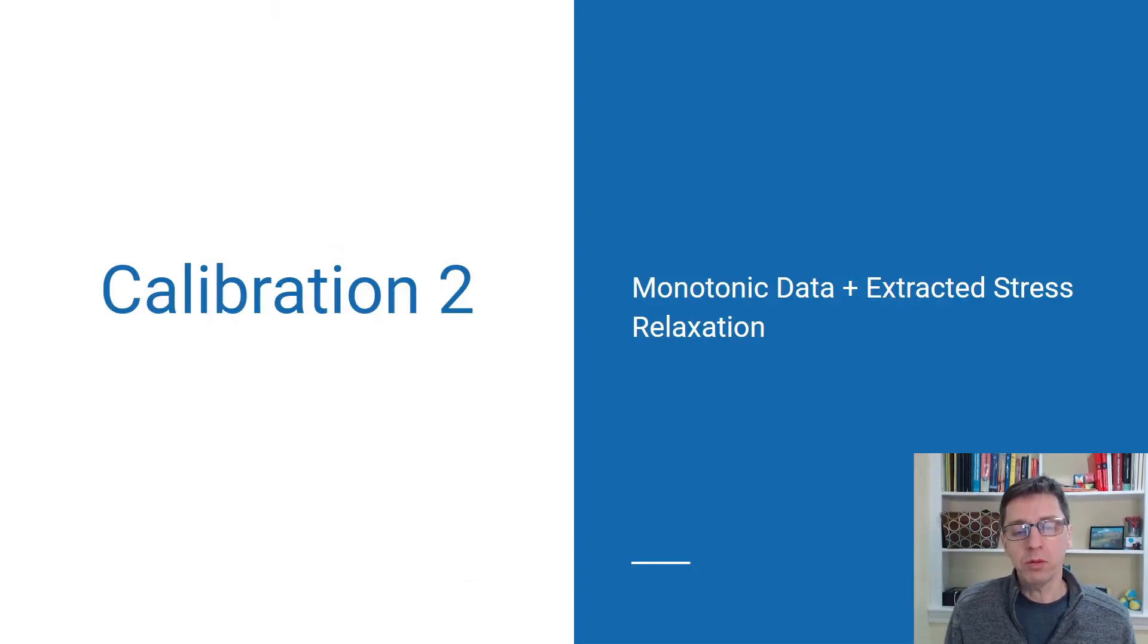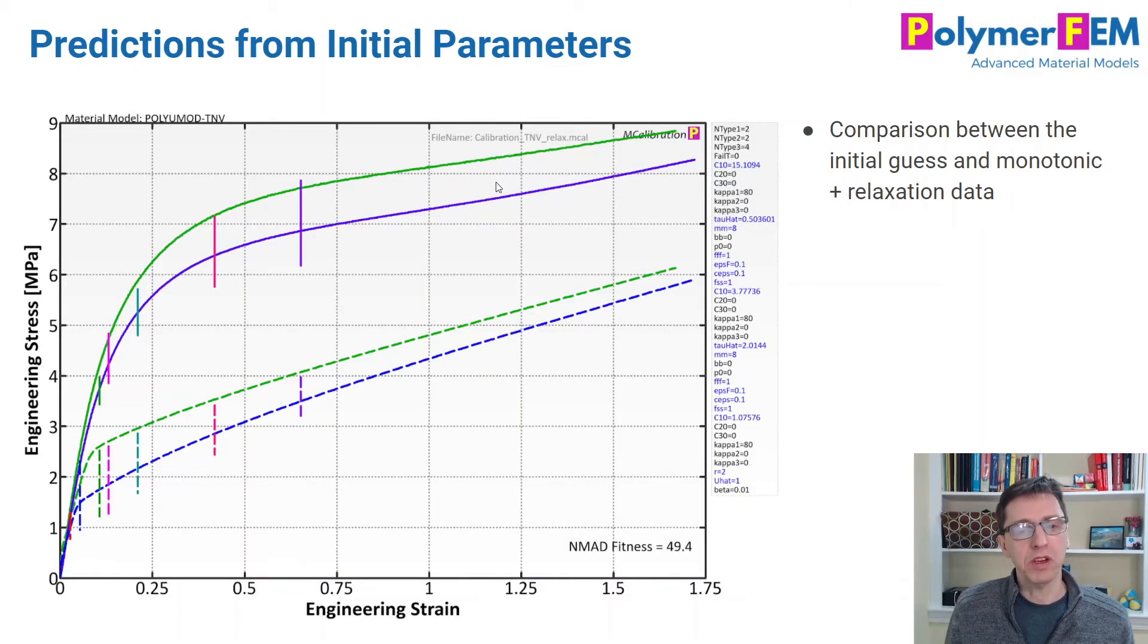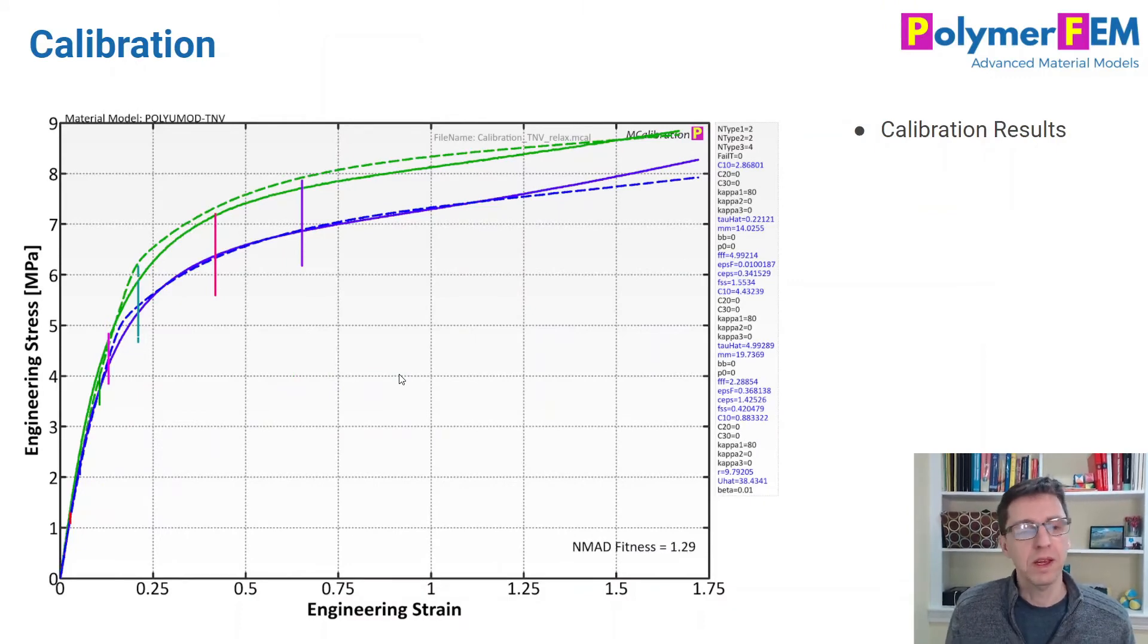Calibration 2. What if we now not only have the monotonic test, but we also activate the stress relaxation parts of these tests and calibrate to that? Here's the initial guess in dashed lines. It's pretty far from it. I run the simulation, this calibration for a little bit, and these are the results I get after calibration to this data. See these vertical lines here, that's the relaxation segments. It loads up here and then it relaxes. The error is actually quite good again, 1.29%. It looks fabulous, actually.